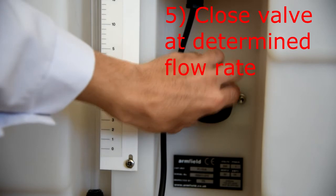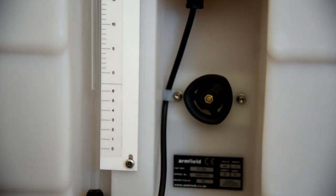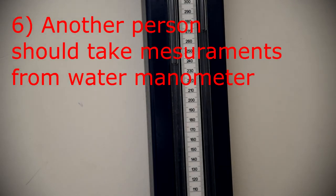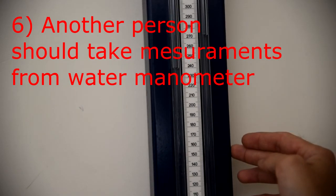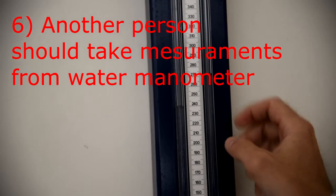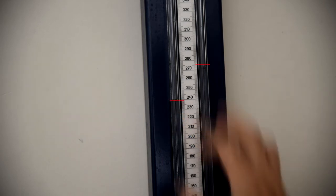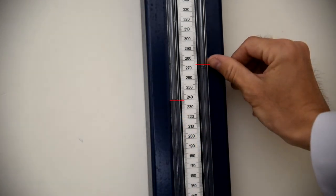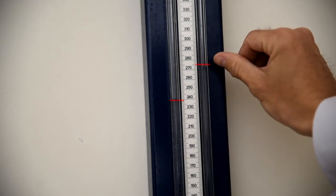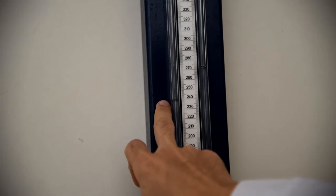Here also, you need help of your groupmates in order to get readings from manometers. At the same time, when you make timings in the hydraulic bench, one of your groupmates should take values from these manometers. Now, we have these values of head loss. The first one is near 275, and the second head loss is 240 millimeters.